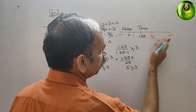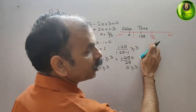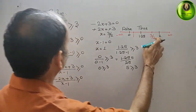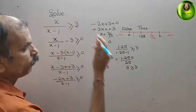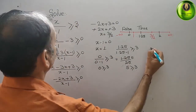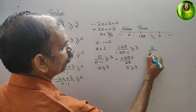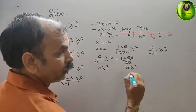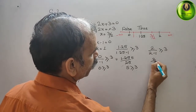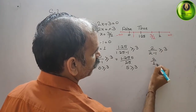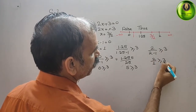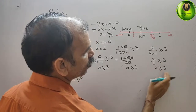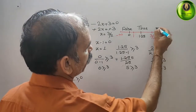For the third sector (x > 1.5), we take x = 2. Substituting: 2/(2-1) = 2/1 = 2. Since 2 ≥ 3 is false, we mark this sector as false.